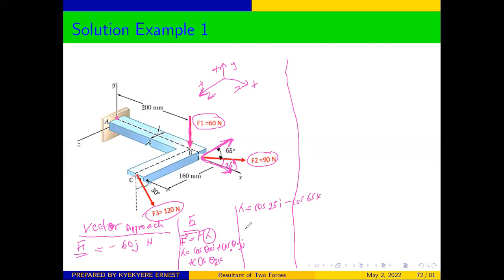From lambda we can get F2 in vector form. F2 in vector form is equal to 81.65 times lambda, giving us the vector components for F2.